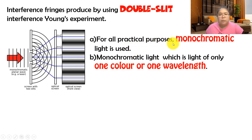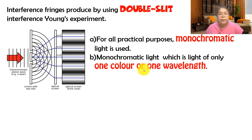Monochromatic light means one color and one wavelength. For example, red light has one specific wavelength. If you mix red and blue, the results differ because blue and red have different wavelengths. So in this experiment, the color (and thus the wavelength) must be kept constant unless it is the manipulate variable.